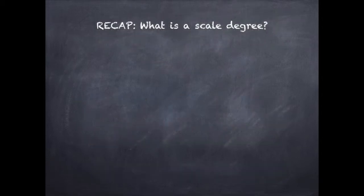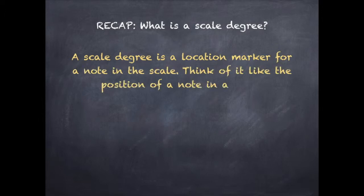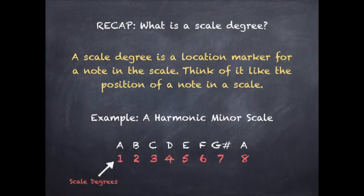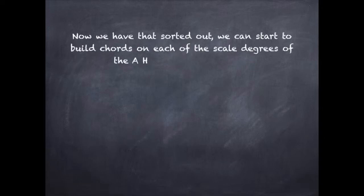Recap: what is a scale degree? A scale degree is a location marker for the note in the scale — think of it like the position of a note in a scale. For example, in the A harmonic minor scale: A is number 1, B is place number 2, C is place number 3, and so on. These numbers are the scale degrees and location markers for all the notes in the A harmonic minor scale. Now we have that sorted out, we can start to build chords on each of the scale degrees of the A harmonic minor scale.